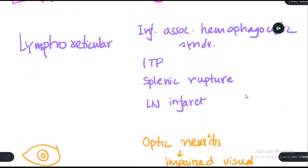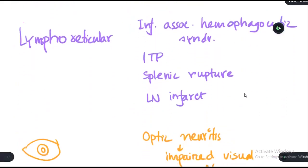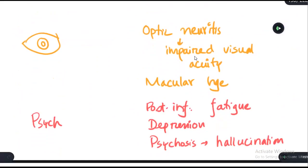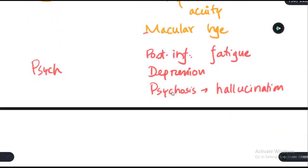In the lymphoreticular system, there can be infection-associated hemophagocytic syndrome, idiopathic thrombocytopenic purpura, splenic rupture, and lymph node infarction. In the ocular system, the patient can develop optic neuritis, which can lead to impaired visual acuity, and there can also be macular hemorrhage.